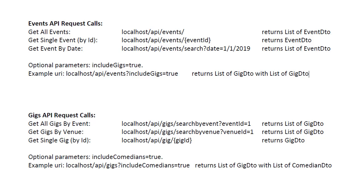Let's have a look at the API we will be creating. We will have an API for comedy events. The main class will be an event, and each event will belong to a specific venue where the event will take place. Each event will also feature several comedians, and each comedian will have a specific performance — a gig — that belongs to this specific event. Think of it as a stand-up comedy night.